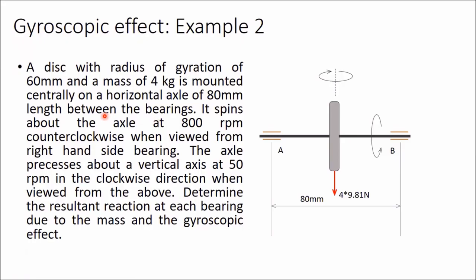In this video we will solve two problems related to gyroscopic effect taken from the book Theory of Machines by S.S. Ratan. The first problem: a disc with radius of gyration of 60 mm and a mass of 4 kg is mounted centrally on a horizontal axle of 80 mm length between the bearings. It spins about the axle at 800 rpm counterclockwise when viewed from the right-hand side.